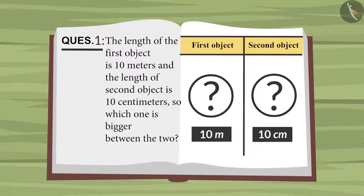The question is, there are two objects. The height of the first object is 10 meters and the height of the second object is 10 centimeters. Which among them is bigger?